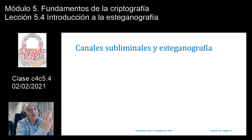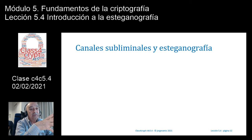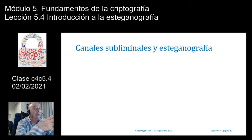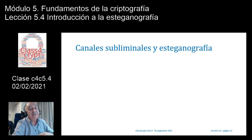¿Cuántas imágenes se suben hoy a redes sociales? ¿Cuántos vídeos se suben por minuto a YouTube? ¿Cuántas canciones se publican digitalmente? Son cientos de miles de millones. Aunque hay herramientas para detectar si un archivo JPG ha sido manipulado, aplicar técnicas esteganográficas a todos esos archivos para saber si hay algo oculto sería una tarea verdaderamente titánica.